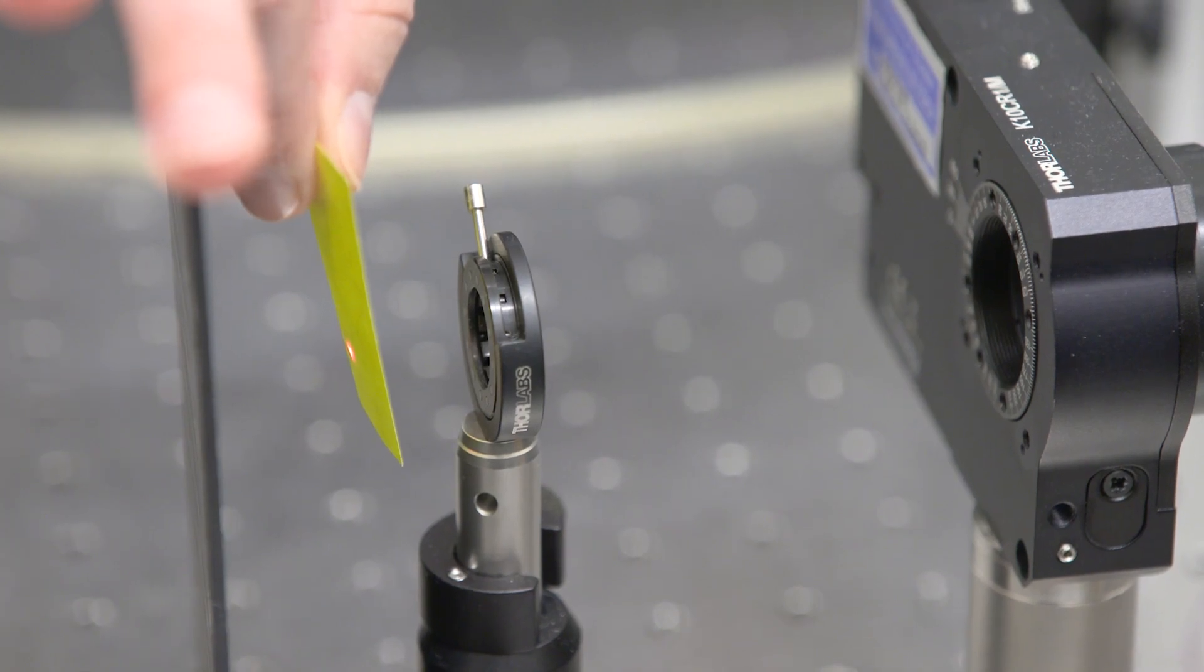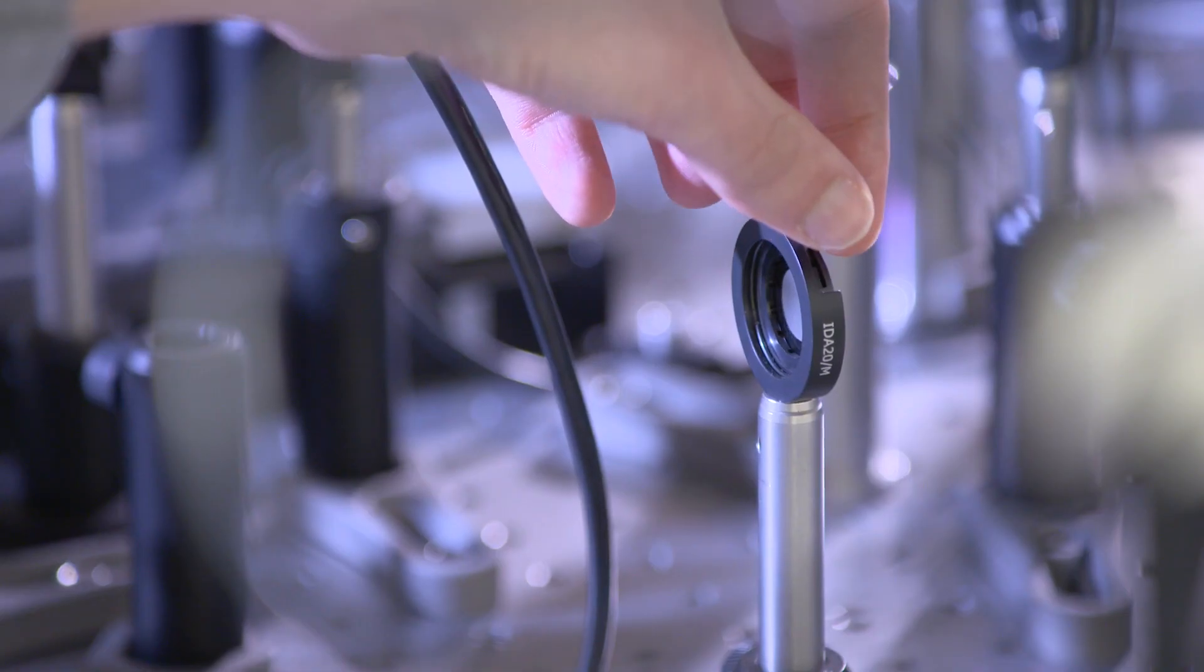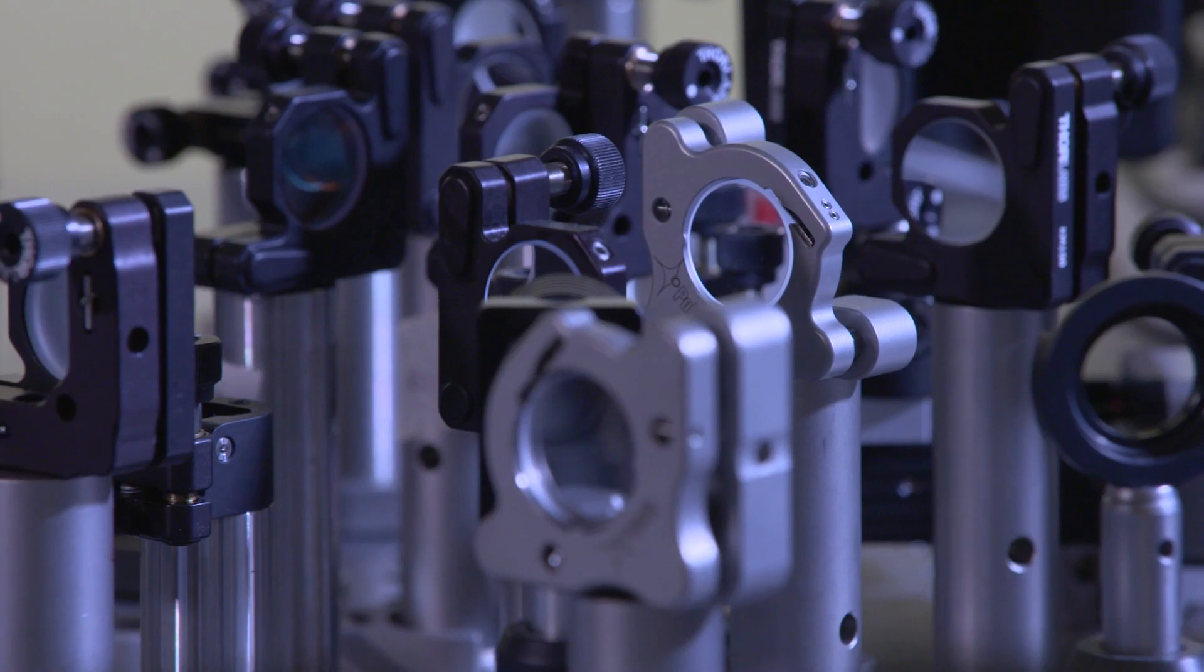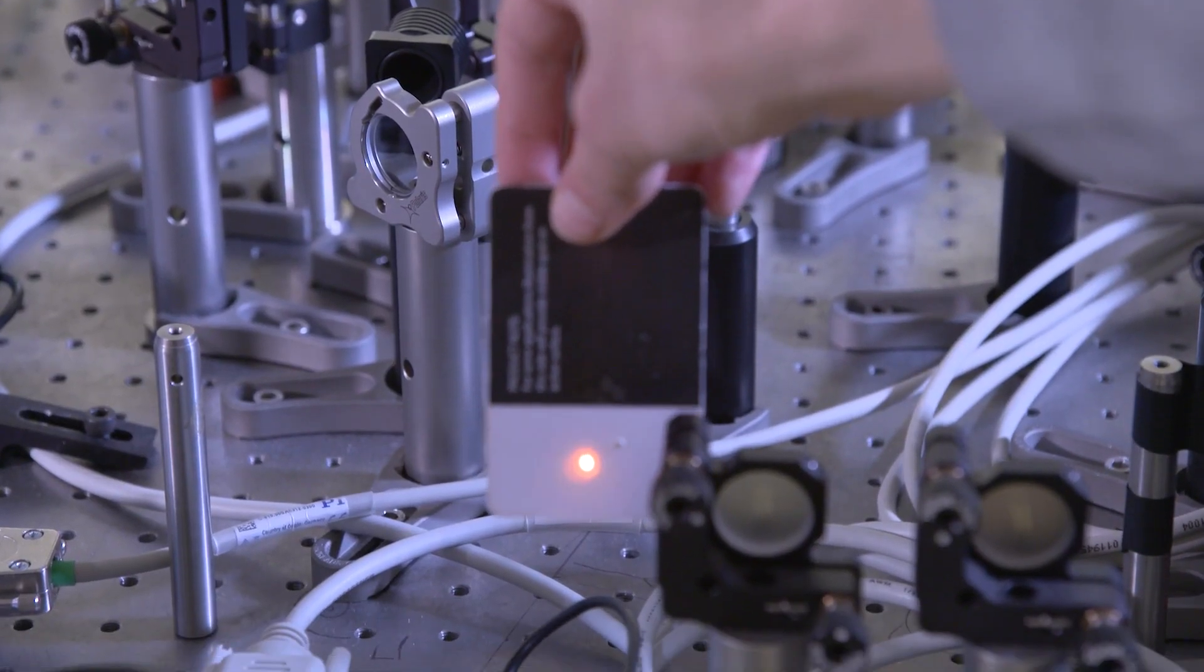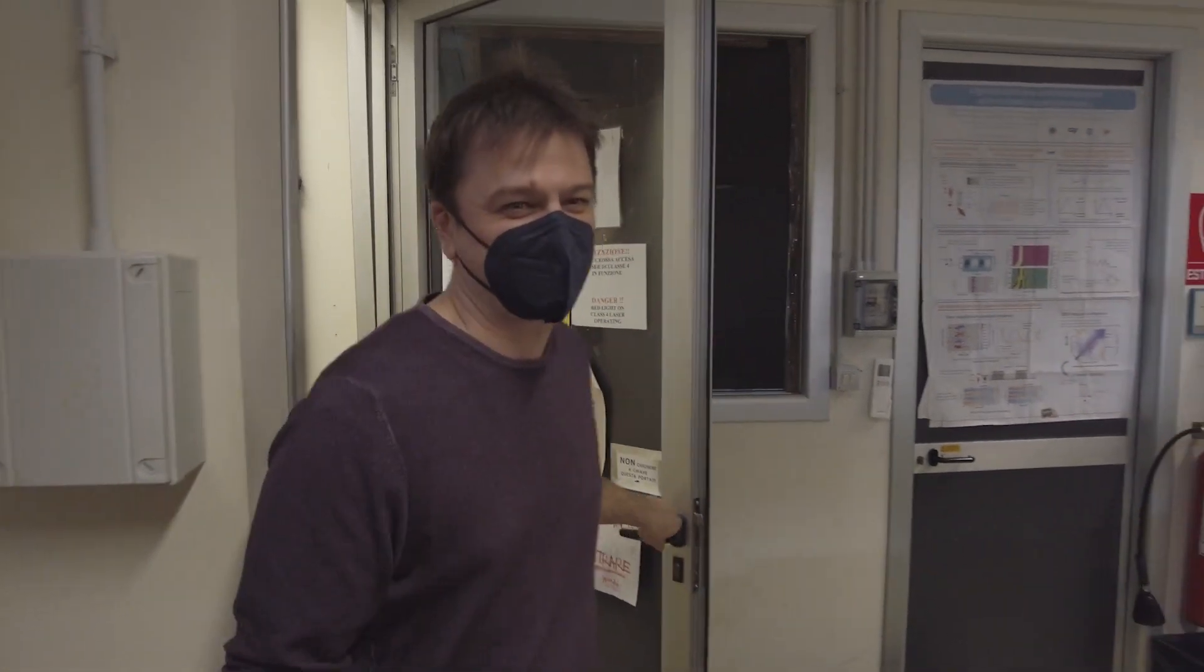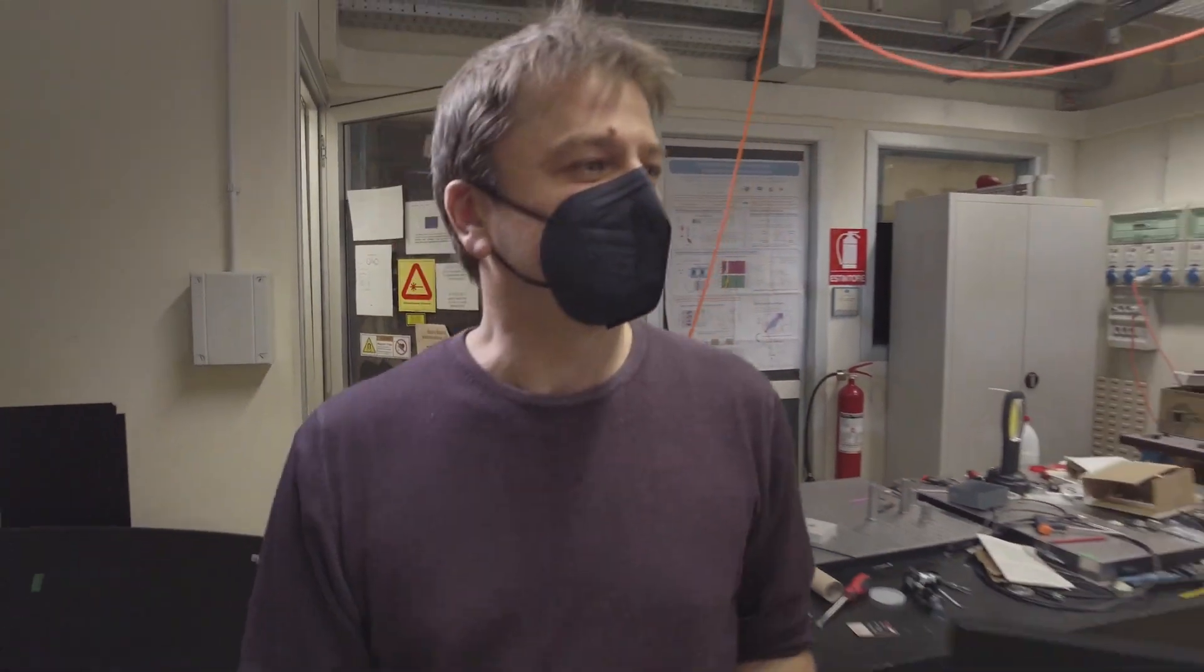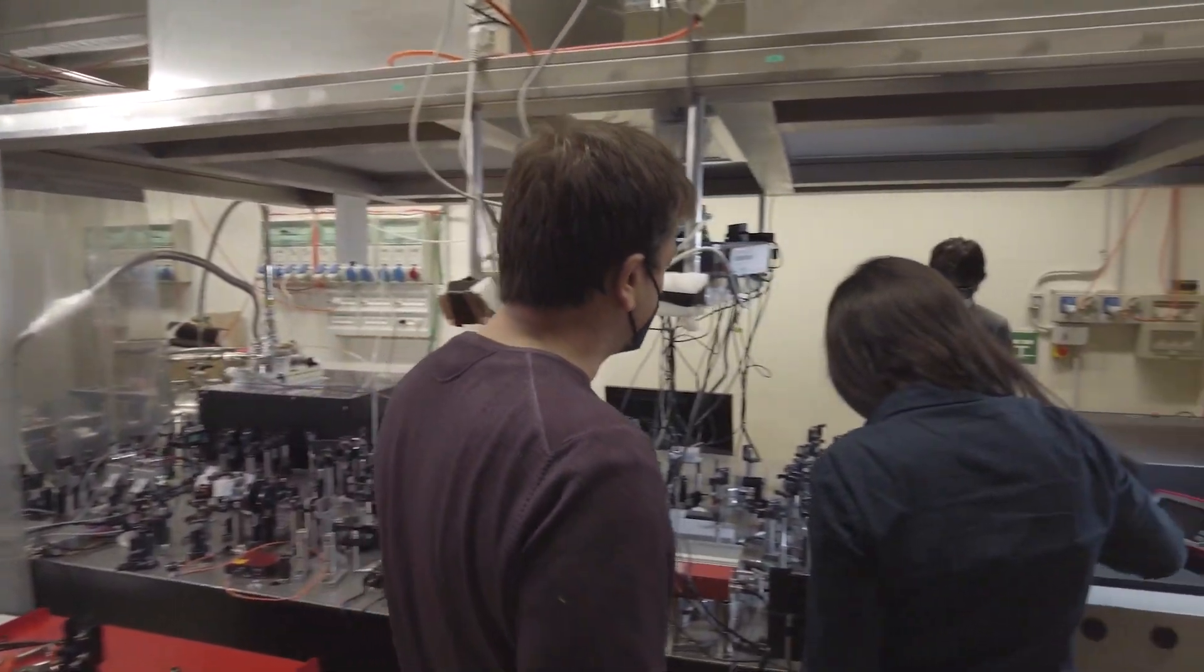In my lab we use light to control material properties on ultra-fast time scales. To give you an idea on this time scale, consider the time of an eye blink divided by 1 million and divided again by 1 million. In our experiment we shine light pulses that are that short on material and observe the rise of new functionalities that only last a very short time.